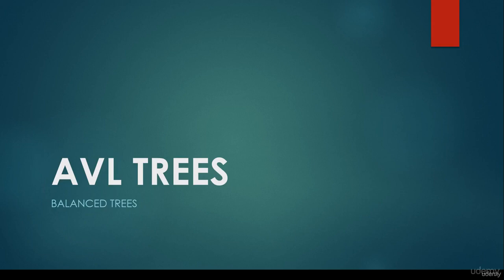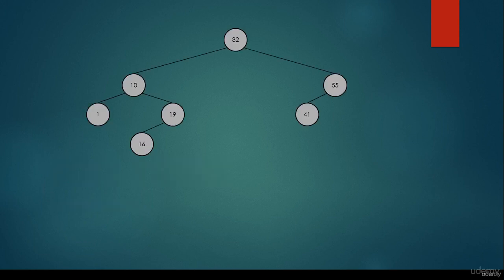In this video we are going to talk about AVL trees and see a little illustration of how these rotations work. Let's get started. Let's suppose this situation: we have a tree-like structure with the root node 32, a left subtree and right subtree and so on.